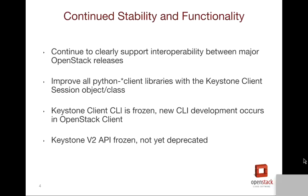We are working to improve all the integration with Keystone in the Python client libraries. Specifically, this revolves around the inclusion of the session object and making sure that the experience utilizing these libraries is much better. The Keystone client's CLI is now frozen — all new CLI development will be occurring in OpenStack client. We aren't looking to deprecate the CLI support in Keystone client itself yet, but no new development will occur there. Similarly, the V2 REST API for Keystone is frozen. It has not yet been deprecated, but we are making a big push to get everybody to V3, so deprecation can occur in the next few cycles, but will not occur in Kilo.